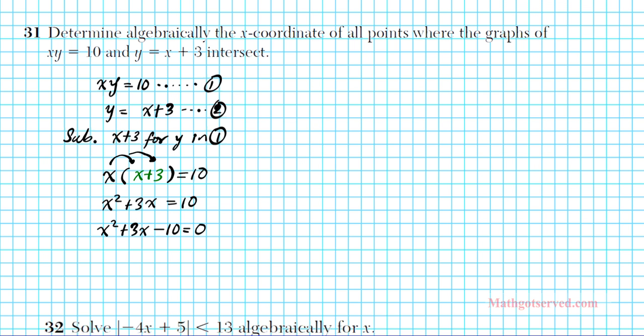Let's factor this expression right here. We are going to use the x game. AC goes on top. A is 1, B is 3, and C is negative 10. So AC is negative 10. B is 3.